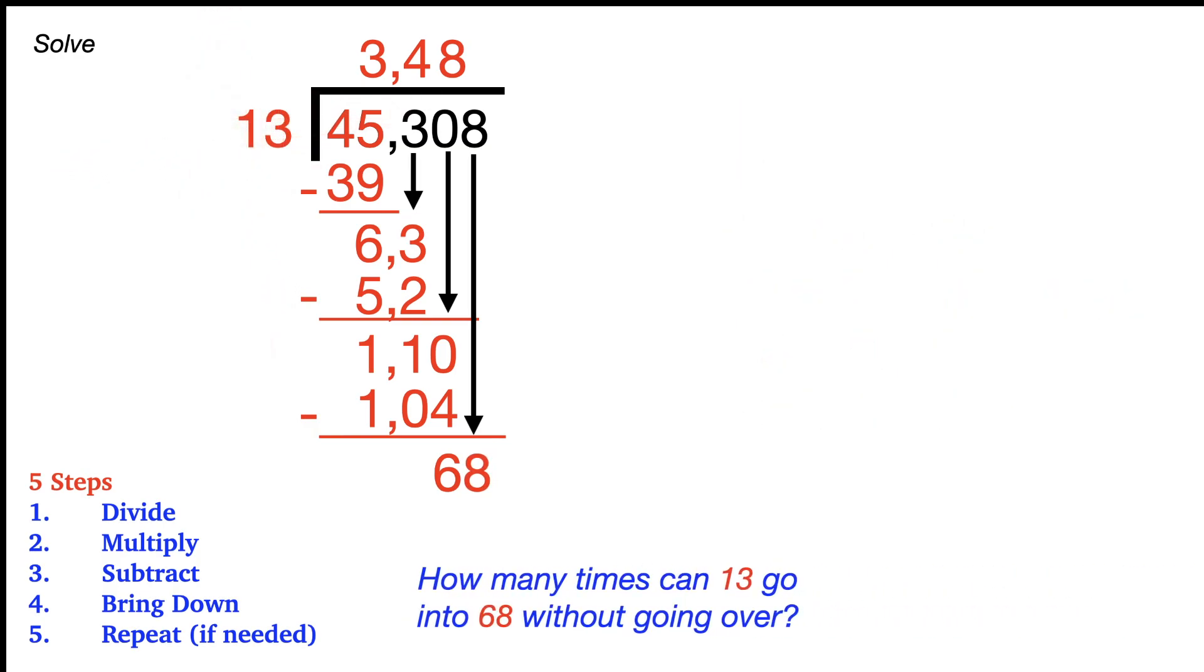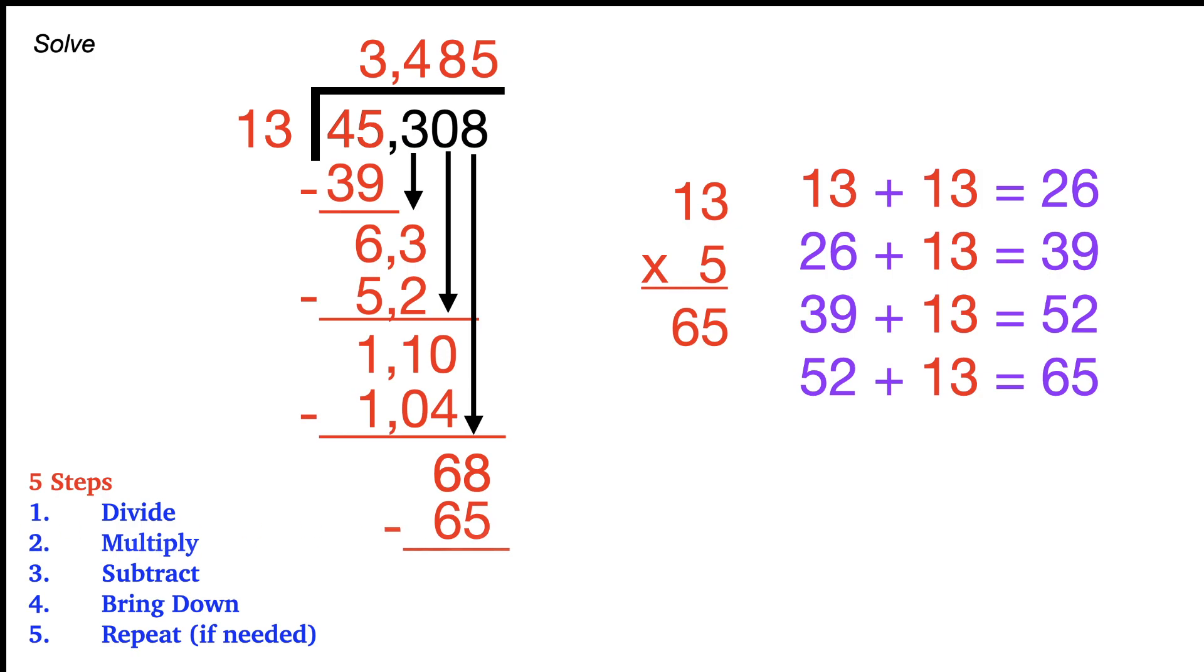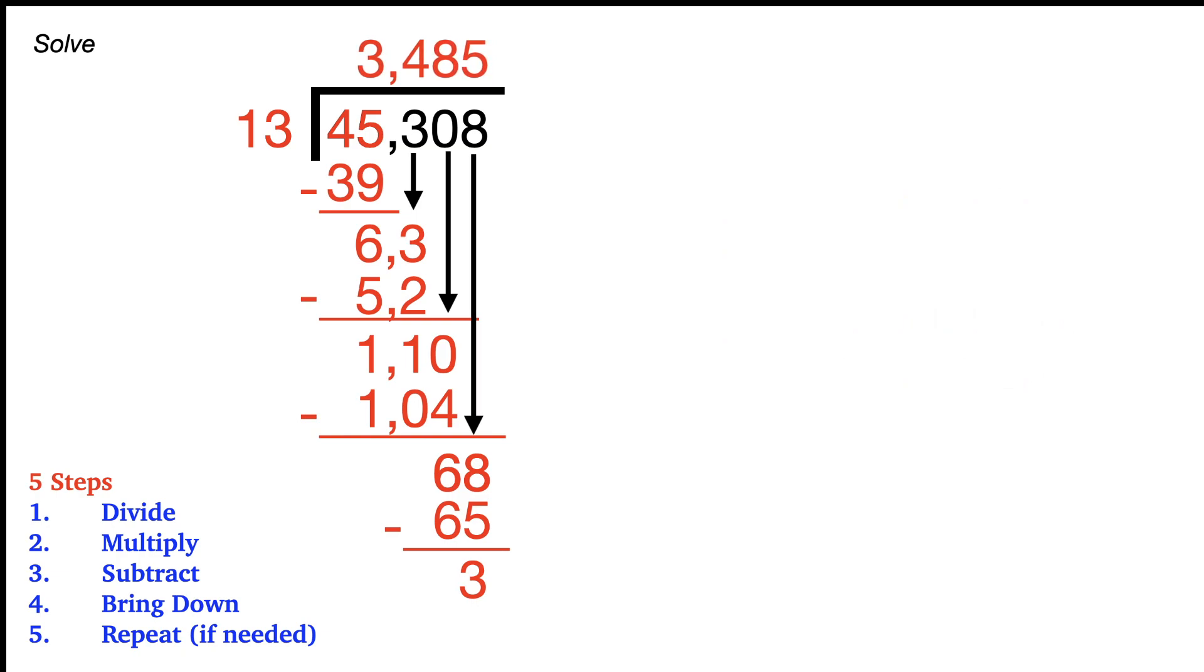How many times does 13 go into 68 now without going over? I'm just going to use the repeated addition strategy again. You can do this mental math, I'm just showing you the steps there. But you can see that like last time, 52 plus 13 equals 65. And that actually is perfect. So we have five groups of 13. The 5 goes on top. 13 times 5 is 65. The 65 goes on the bottom. We subtract, and that would be 3. That 3 at the bottom is going to become our remainder that we put at top.